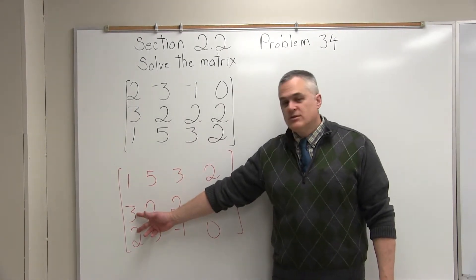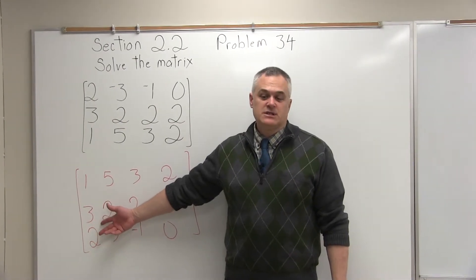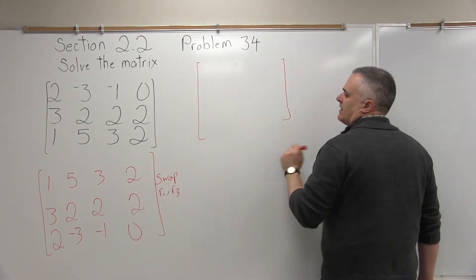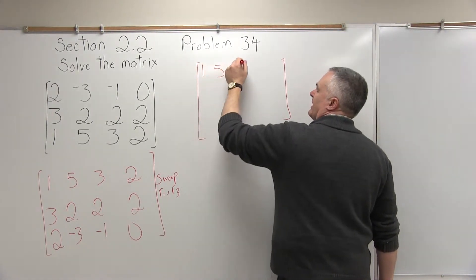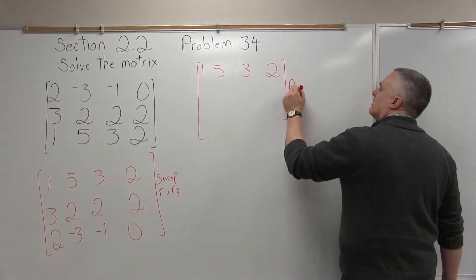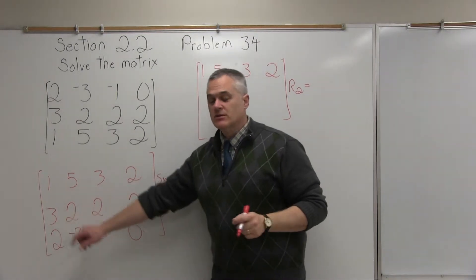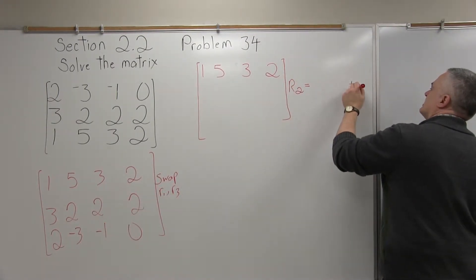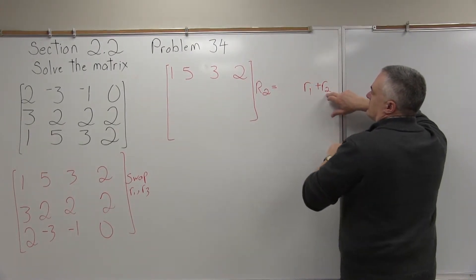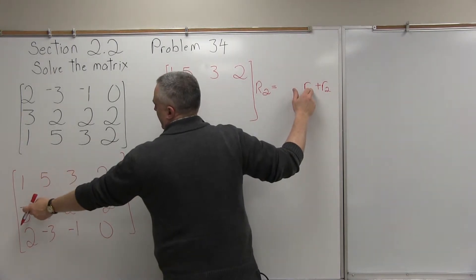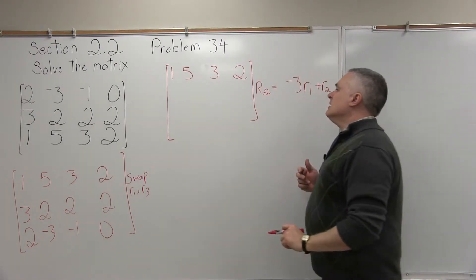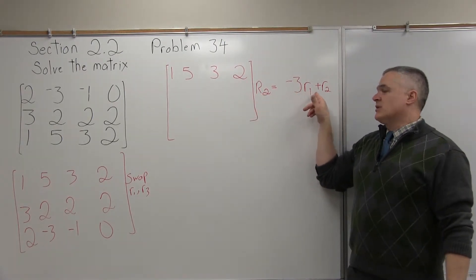Step 2 is that the two values under the 1 in the leftmost column must be turned into 0s. Starting with the 3 in row 2: I'll set up my next matrix. The top row stays as is: 1, 5, 3, 2. To zero the 3, my equation starts with row 2 — whatever row the equation starts with, it must end with the same row. The row with the 1 in the same column is row 1, multiplied by the number I'm zeroing but with opposite sign. I'm zeroing a positive 3, so I use negative 3. The equation is: new row 2 = negative 3 times row 1 plus old row 2.